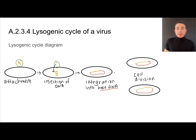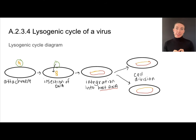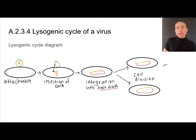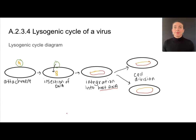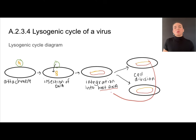When the host cell divides to create new cells, it copies its genetic material first. Because the viral DNA has been incorporated into the host cell DNA, the viral DNA also gets copied and incorporated into the new cells. This is really where the lysogenic cycle gets its name. Those new cells produce more new cells, and all of those new cells will carry the viral DNA.